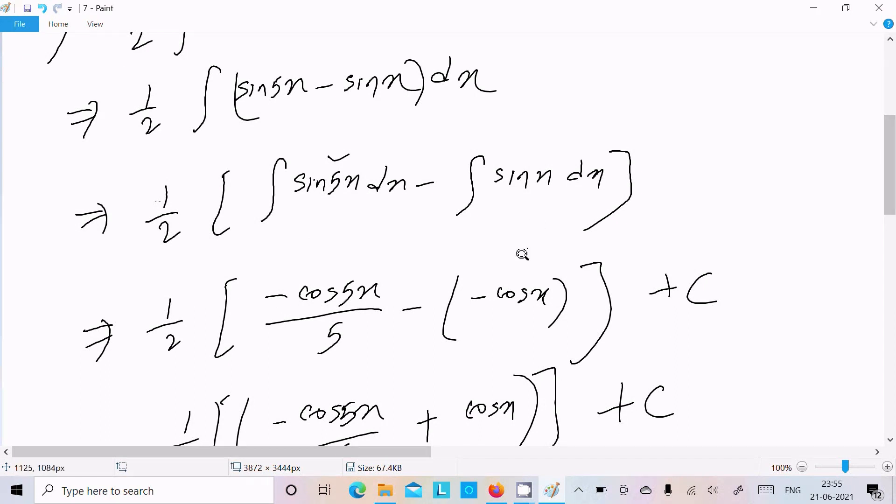If minus sin 2x integration we need to find that, sin 2x, we write here minus cos 2x and 2 is there, divide by 2. Like that, sin 3x, minus cos 3x divided by 3. This is about that one that I already discussed so many times, so watch my previous video.